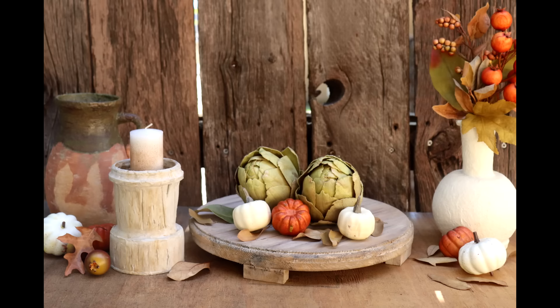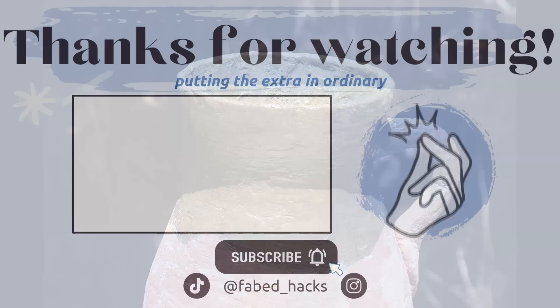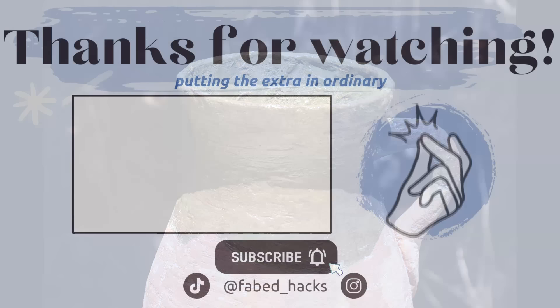And don't forget, part one of this episode, featuring the Turkish Olive Jar DIY, will be linked in the description, and you can also find it here in the Dollar Dupe Series playlist, along with other fabulous dupes from Pottery Barn, Restoration Hardware, Anthropologie, and others. Thanks so much for watching, and we'll see you next time.